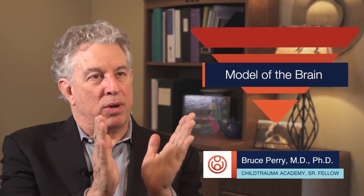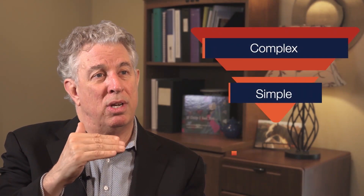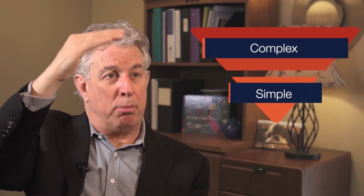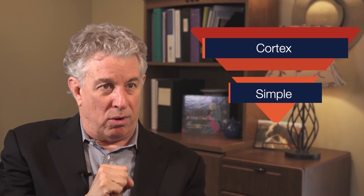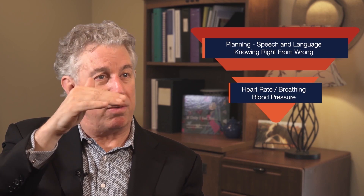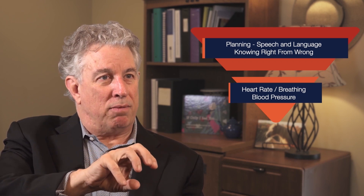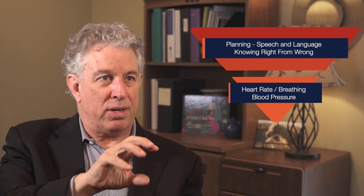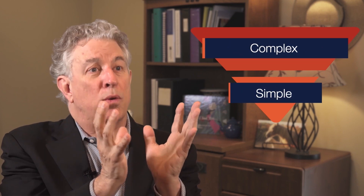You look at this simple model of the brain — part of what we're trying to illustrate with this image is that the brain is organized in a hierarchical fashion, from the lowest and simplest parts all the way up to the highest and most complex parts of the brain. This top part of the brain — everybody's probably heard of the term cortex — is involved in planning, speech and language, and knowing right from wrong. When you go way down to the bottom part of the brain, that part is involved in regulating heart rate, blood pressure, respiration — very simple functions. As you go from the bottom to the top, the brain gets increasingly complex.